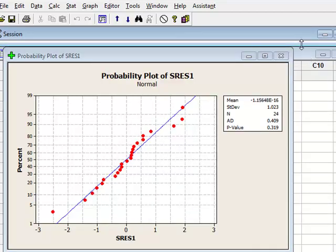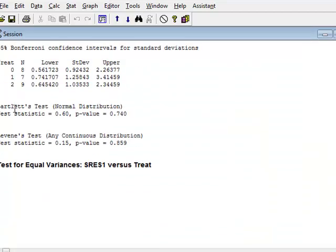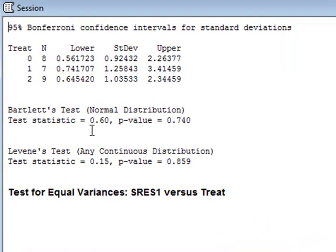The results will appear in the session window. And we can see that it has performed two hypothesis tests. It has performed Bartlett's test for a normal distribution, which is appropriate for our normally distributed data, giving a p-value of 0.740, which says that we should not reject the null hypothesis, in that there is no evidence of a difference in variances between the different treatment levels. It has also performed Levene's test, where it has taken any continuous distribution. And again, the p-value of 0.859 agrees that we should not reject the null hypothesis.